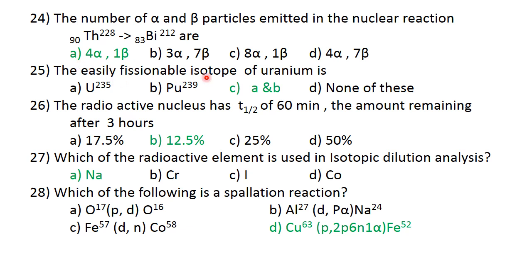The easily fissile isotope of uranium is U-235 and plutonium-239. The option is A and B; the correct answer is A and B. The radioactive nucleus has a half-life of 60 minutes, which is 1 hour. The amount remaining after 3 hours: 100 becomes 50 after 1 hour, 25 after 2 hours, 12.5 after 3 hours. 12.5% is required. The correct answer is B.